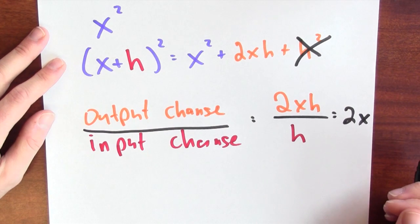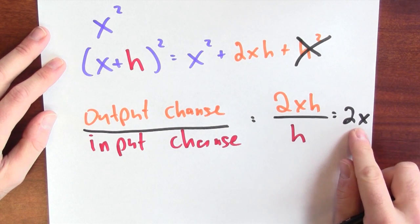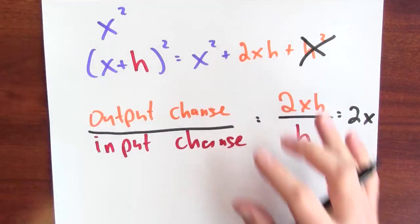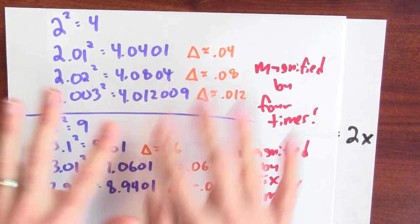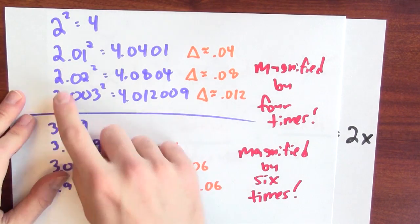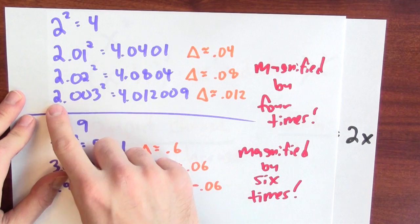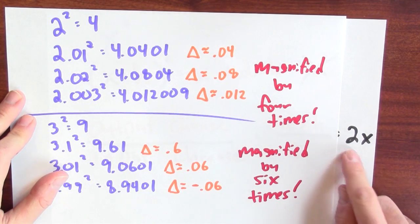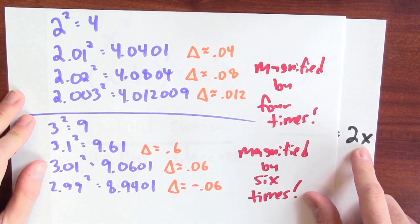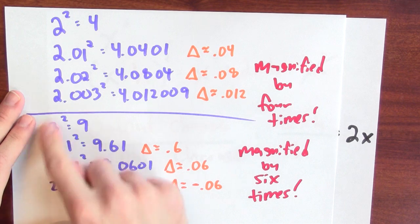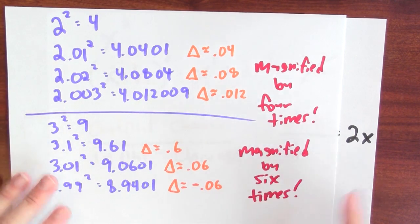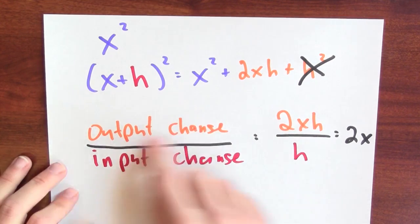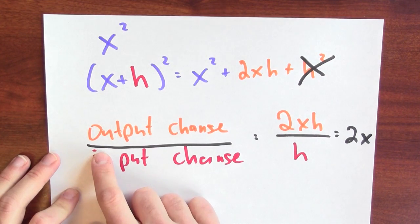That makes sense — think back to what just happened when we were plugging in nearby values. When I was wiggling the input around 2, the output was changing by about twice 2, which is 4. When I was wiggling around 3, the output was changing by about twice 3, which is 6. So 2x is the ratio of output change to input change.